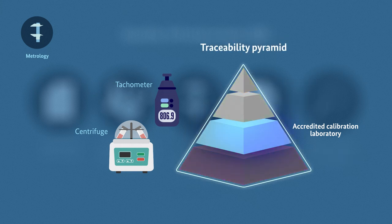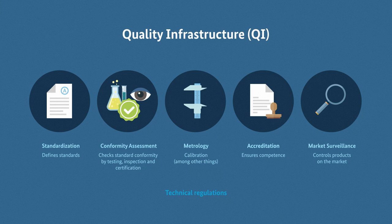As you have heard, accredited bodies are an essential part of that pyramid. But what does accredited actually mean? And how can credibility be given to an institution? This brings us to the next element of quality infrastructure, accreditation.